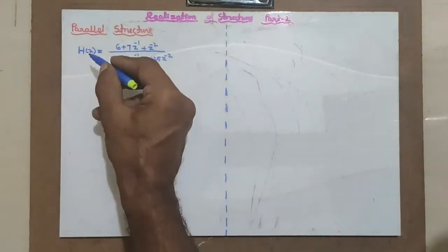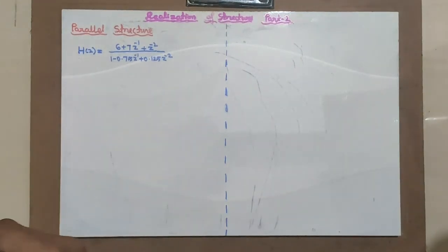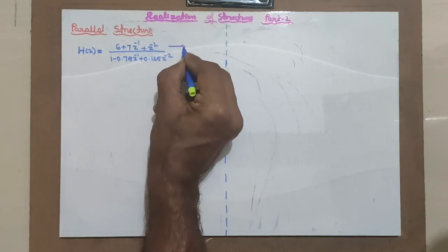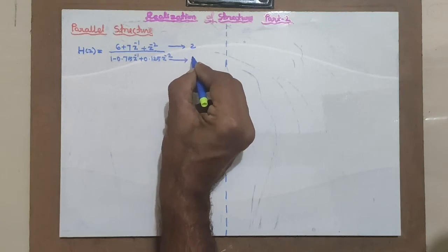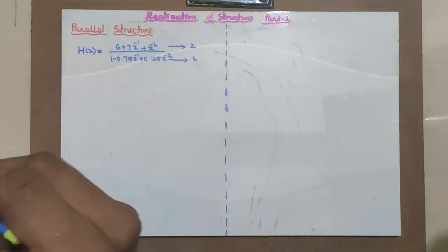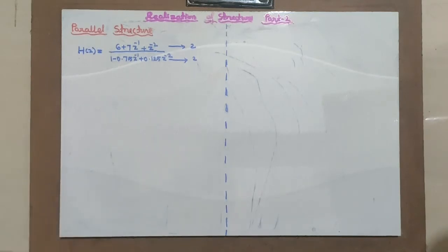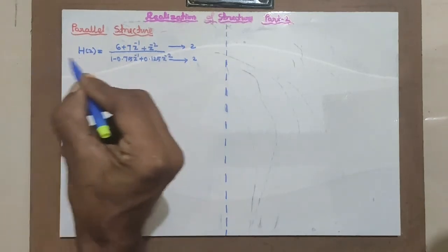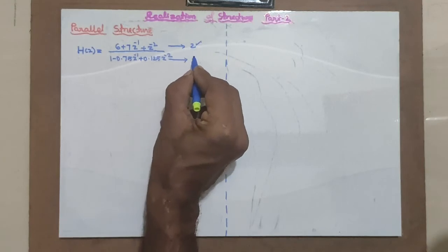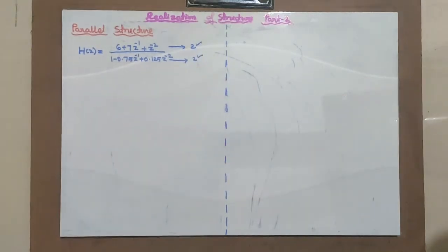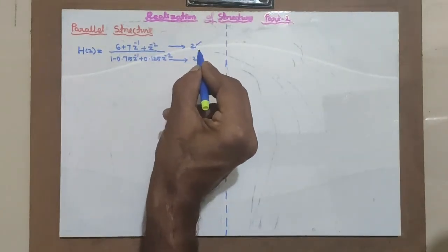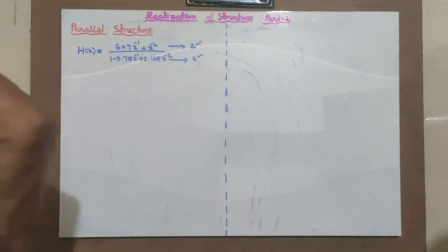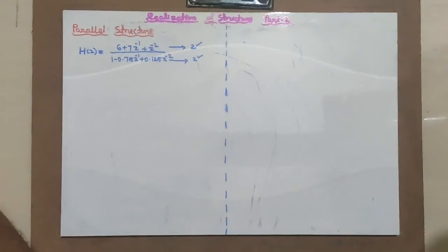Let us now see parallel structures. Once you have H of Z, check the order of numerator and denominator. The numerator is order 2 (Z raised to minus 2) and the denominator is also order 2. Parallel structures are implemented using partial fraction expansion. To apply partial fraction expansion the numerator polynomial must be less than the denominator polynomial — since 2 is not less than 2, we cannot apply it directly. So we must convert H of Z into a proper fraction form by dividing numerator by denominator.